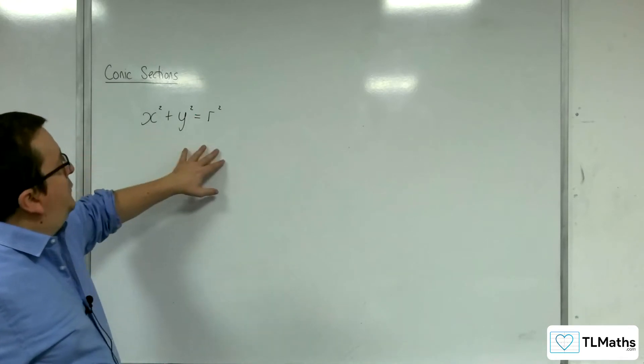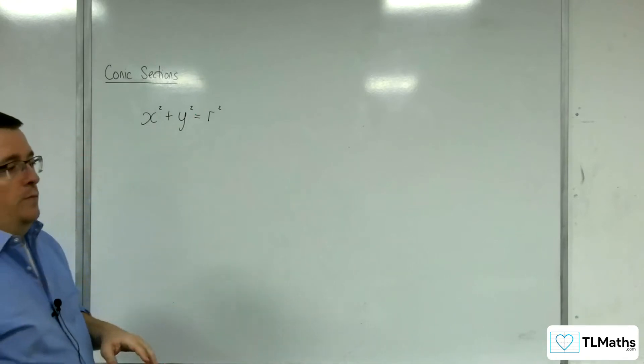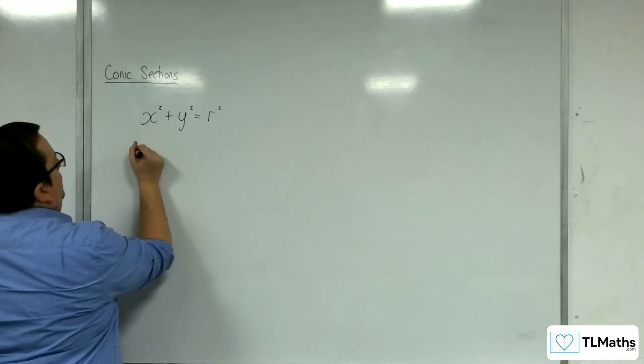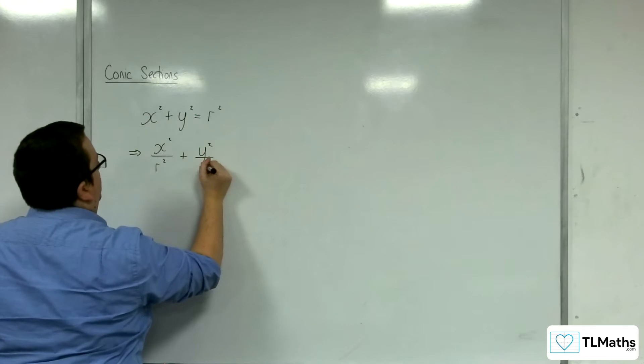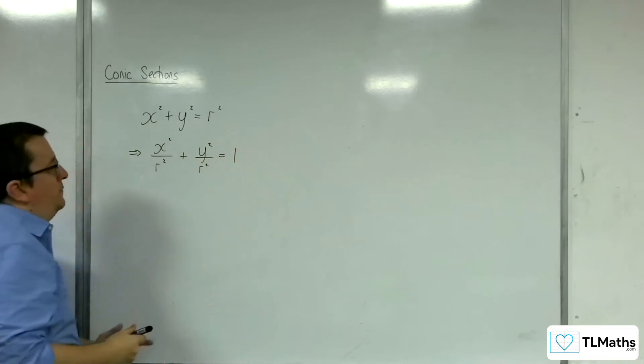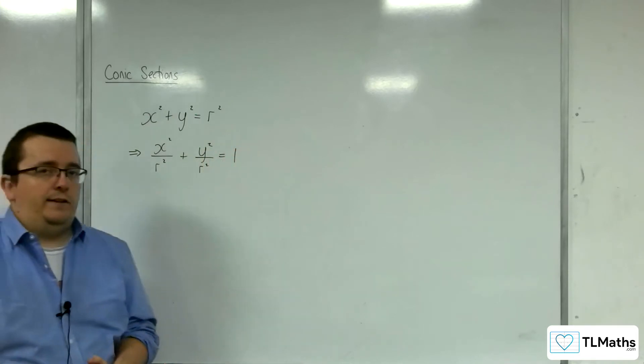Now, we can write this in a different form by dividing through by r squared. So you could write this as x squared over r squared plus y squared over r squared equals 1, and have it written in this slightly different form.